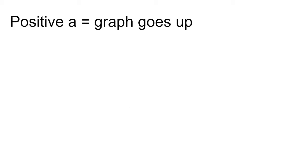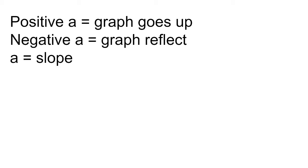So, in general, positive a makes the graph go up, and negative a makes the graph reflect, and a is the slope.